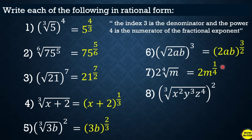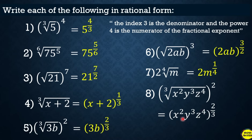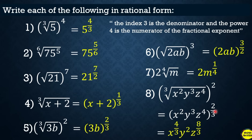Another example: the cube root of x squared y cubed z to the fourth power, all squared. The entire radicand is grouped, so they're raised to 2 over 3. We can simplify by multiplying each inner exponent by 2 over 3: x gets 2 times 2/3 = 4/3; y gets 3 times 2/3, the 3 cancels giving y squared; z gets 4 times 2/3 = 8/3. The final answer is x raised to 4/3, times y squared, times z raised to 8 over 3.